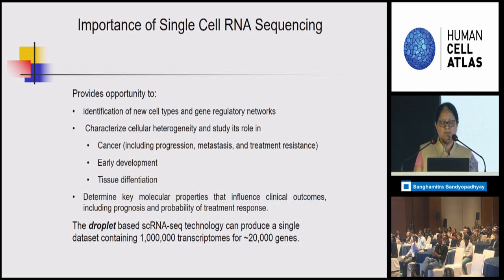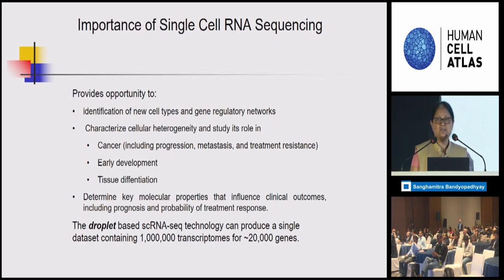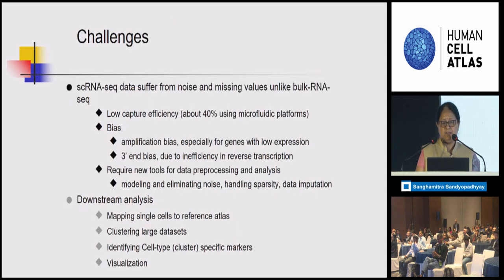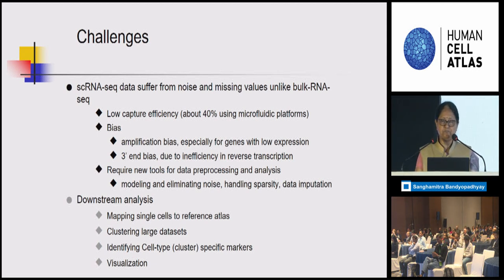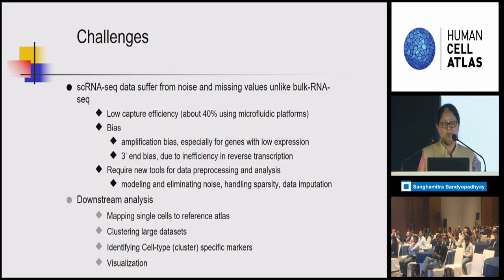Current droplet-based scRNA-seq technology produces quite large datasets — many genes and many cells. These are very high-dimensional datasets which provide many computational challenges. First, the data has a lot of technical noise. There are many missing values due to low capture efficiency and bias in various steps of the data capture process. These challenges necessitate new tools for downstream analysis.